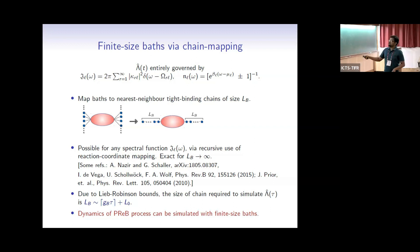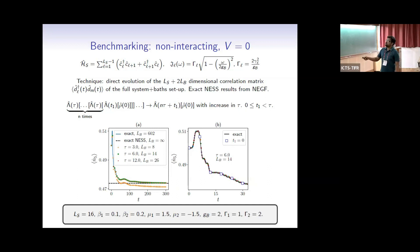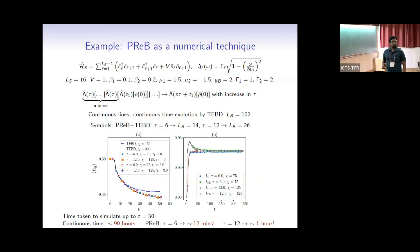Now we put interactions in — with interaction strength of order one, so no perturbation parameter. The story remains the same, but now you use tensor network techniques. The black line is a TEBD result done with large bond dimension up to time 50, requiring a large bath size. But with τ = 6 you get away with bond dimension 75 and bath size 14, obtaining basically the same result. With τ = 12 you can confirm convergence. What took four days of computation by continuous evolution can be obtained in much less time with the refreshed-baths approach.